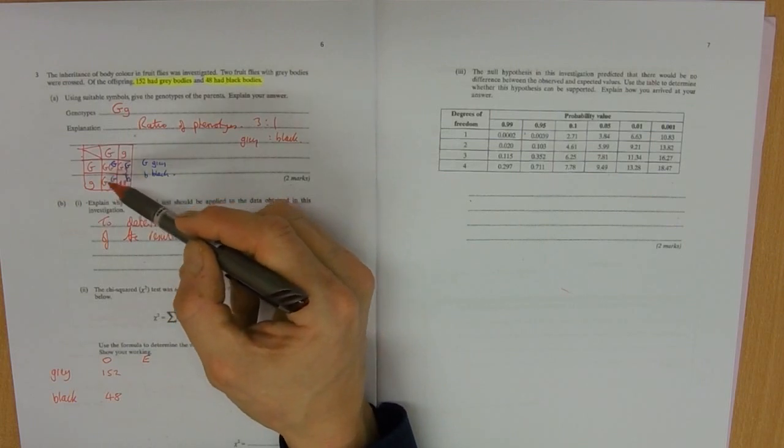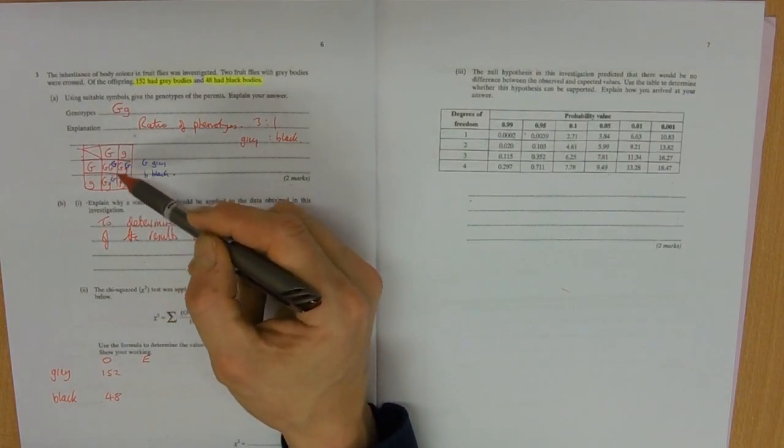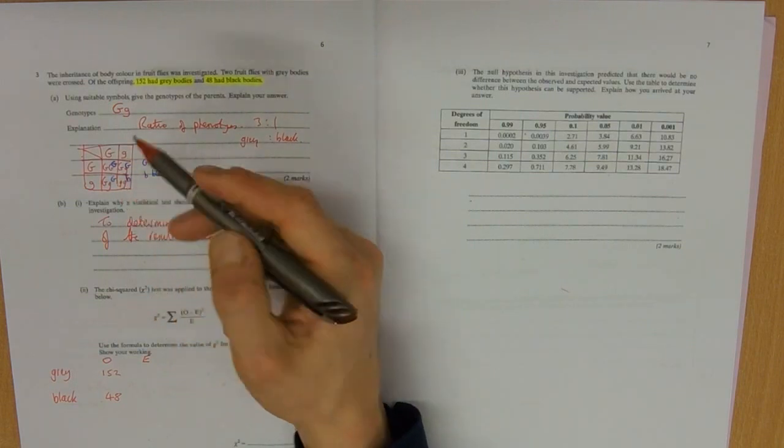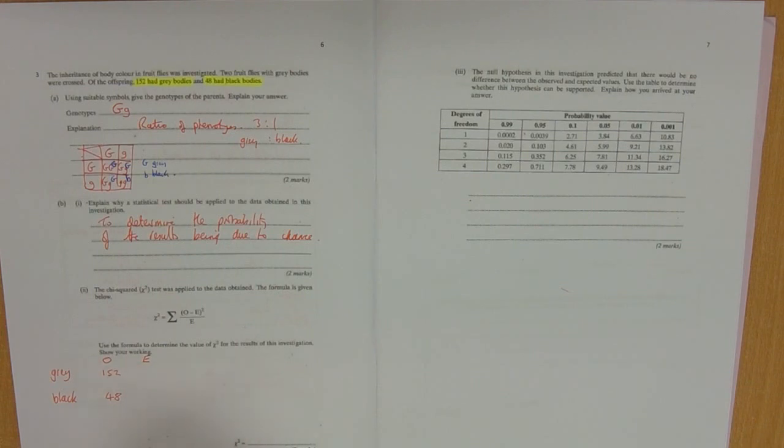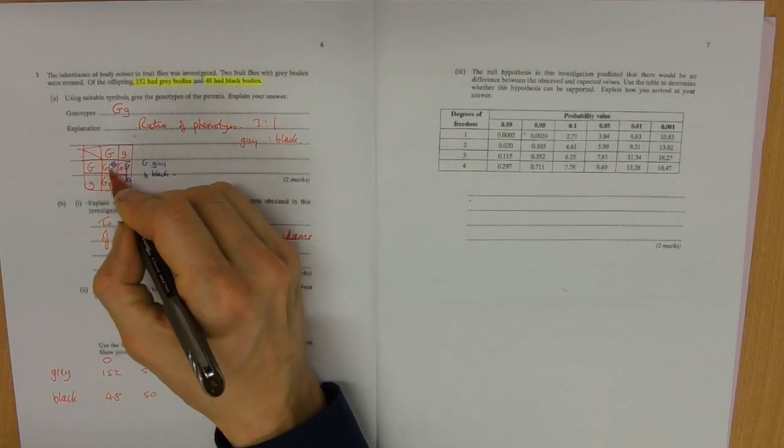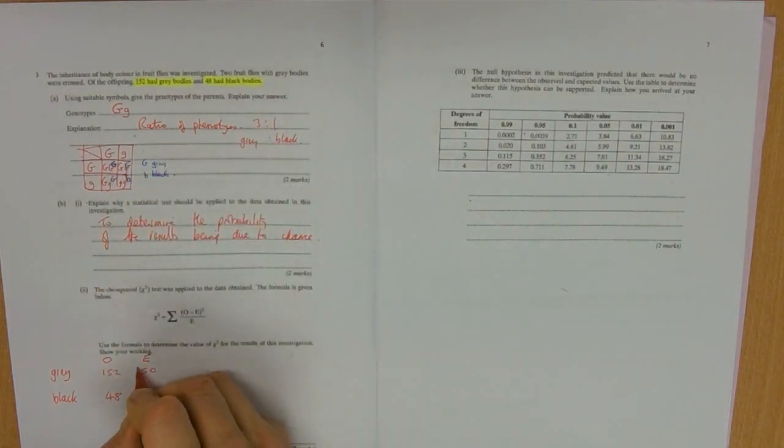If we had four possible genotypes, then we'd expect a quarter of each one. So a quarter of 200 is 50. Expected is 200 divided by 4 equals 50. That would be 50 and there's three of those phenotypes of the grey, so that would be 150. You can check these - that's 200 and that should still be 200.